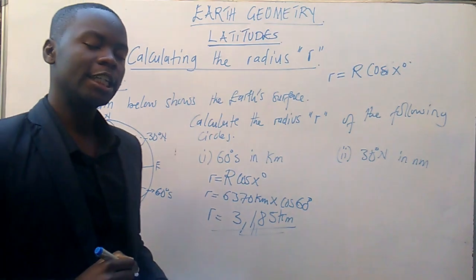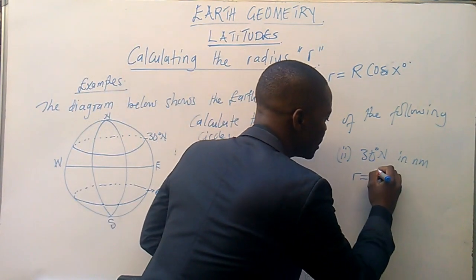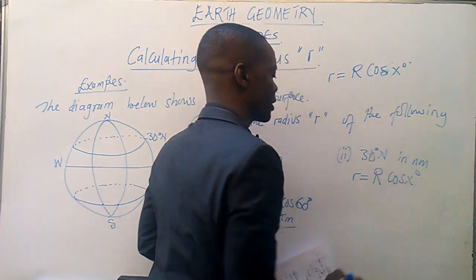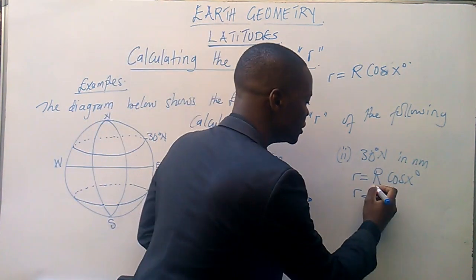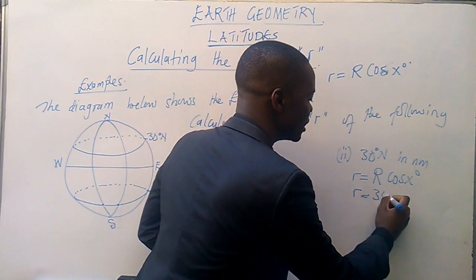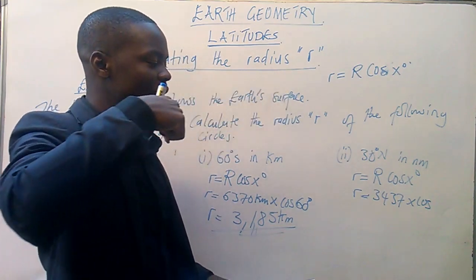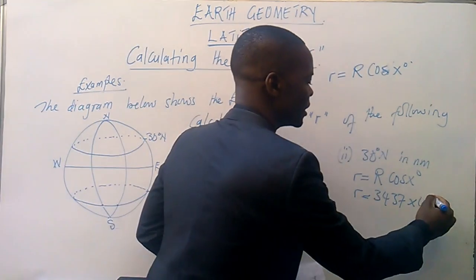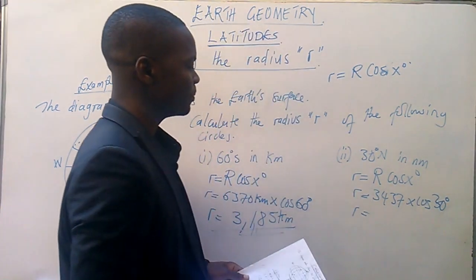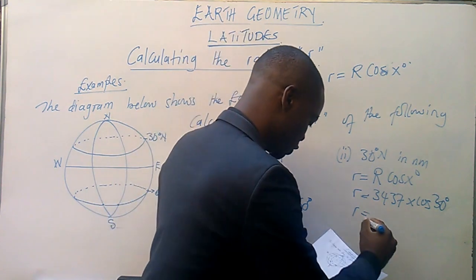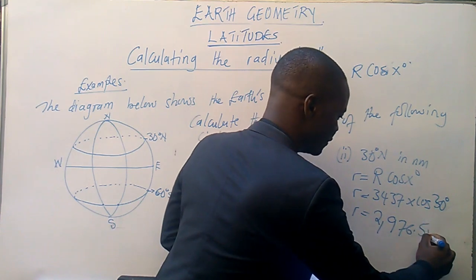So, this is our answer. Let's go to the second question. Here, we must as well start with the formula, which is very important to start with. Then, r is equal to — since we are required to give our answer in nautical miles, we are going to use R as 3437, times cos. The latitude of the circle which we are interrogating is 30 degrees. So when you multiply 3437 times cos 30°, you are going to have 2976.5 nautical miles.